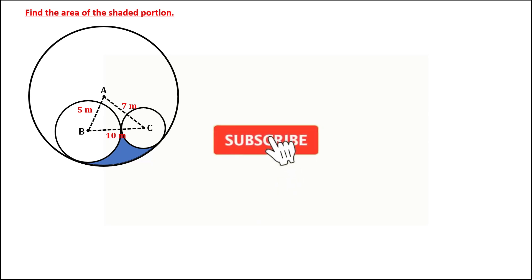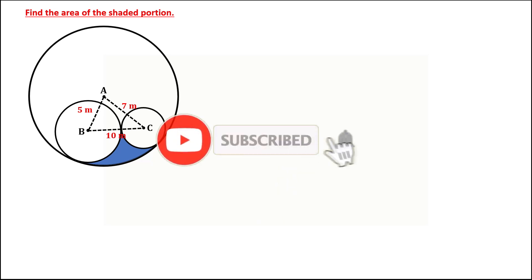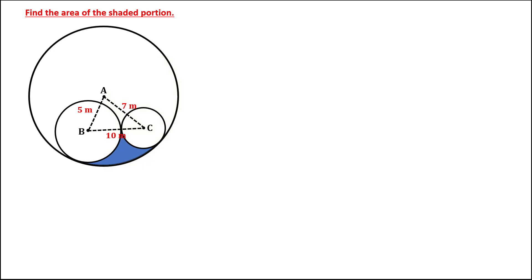Let's have this problem. To find the area of the shaded portion from this given figure, we first need to find the radius for circle A, circle B, and circle C.